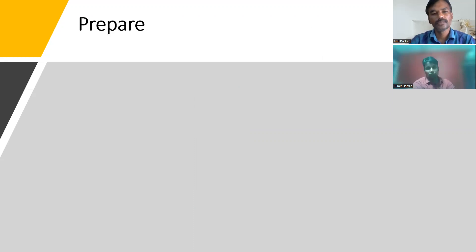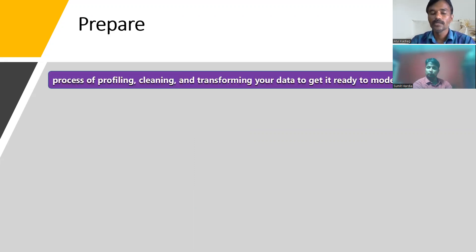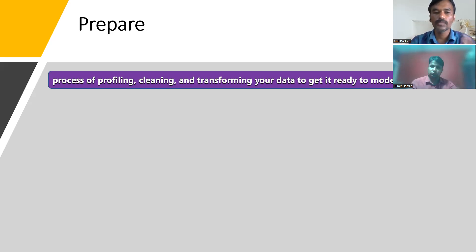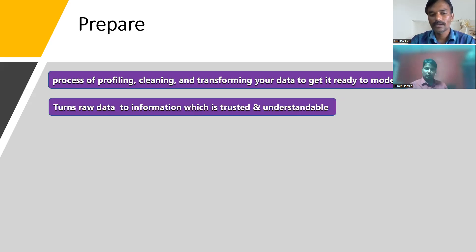The first key area is Prepare. Everything gets started with data which is generated at different places and different sources. Understanding this data and preparing it is important. This involves profiling, cleaning, and transforming your data to get it ready to model. Data coming from various sources will be in a raw format, so we need to clean it, perform quality checks, and do transformations where needed — turning raw data into information that is trusted and understandable.